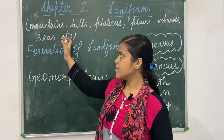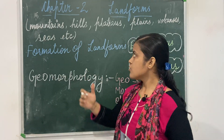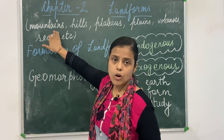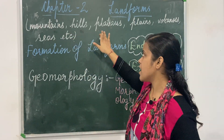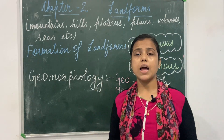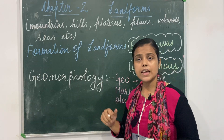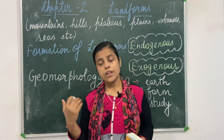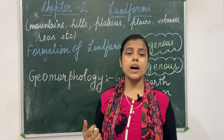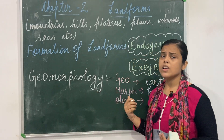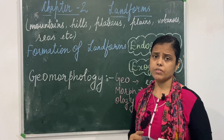I have written some examples here; I have not written all — you can go through your book. For example, mountain is also a type of landform. Hill is also a type of landform. Plateau is a type of landform. Plain area, volcanic area, sea area, gulf, oceans area, waterfall area — all these form a different landform on the surface of the earth.